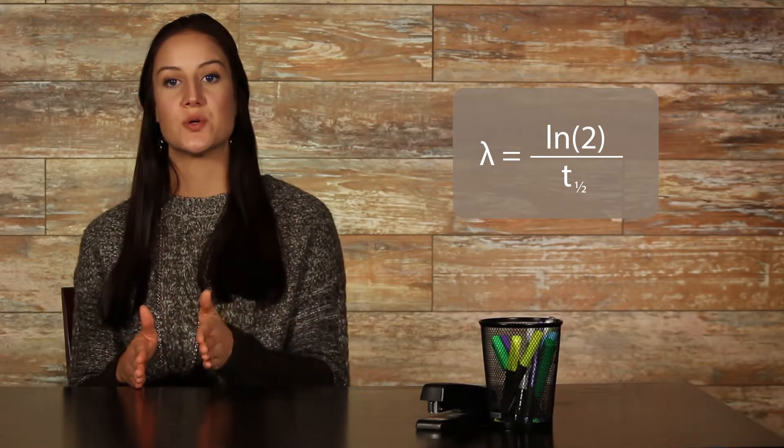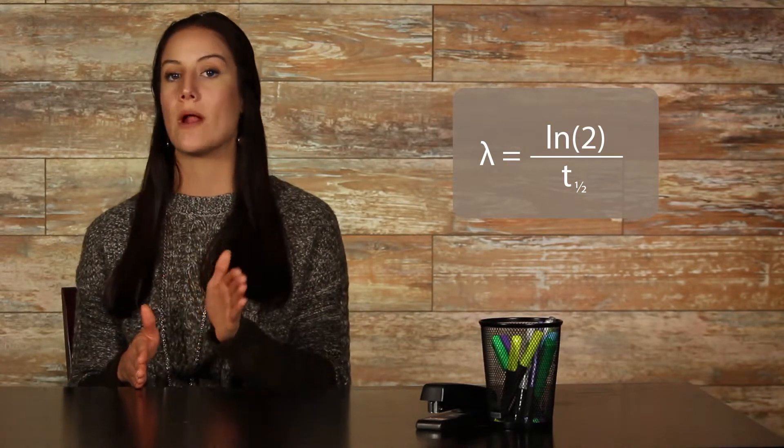If the half-life of the material is known, lambda, the decay constant, can be calculated as lambda equals ln2 over t sub one half, where t sub one half is the half-life.